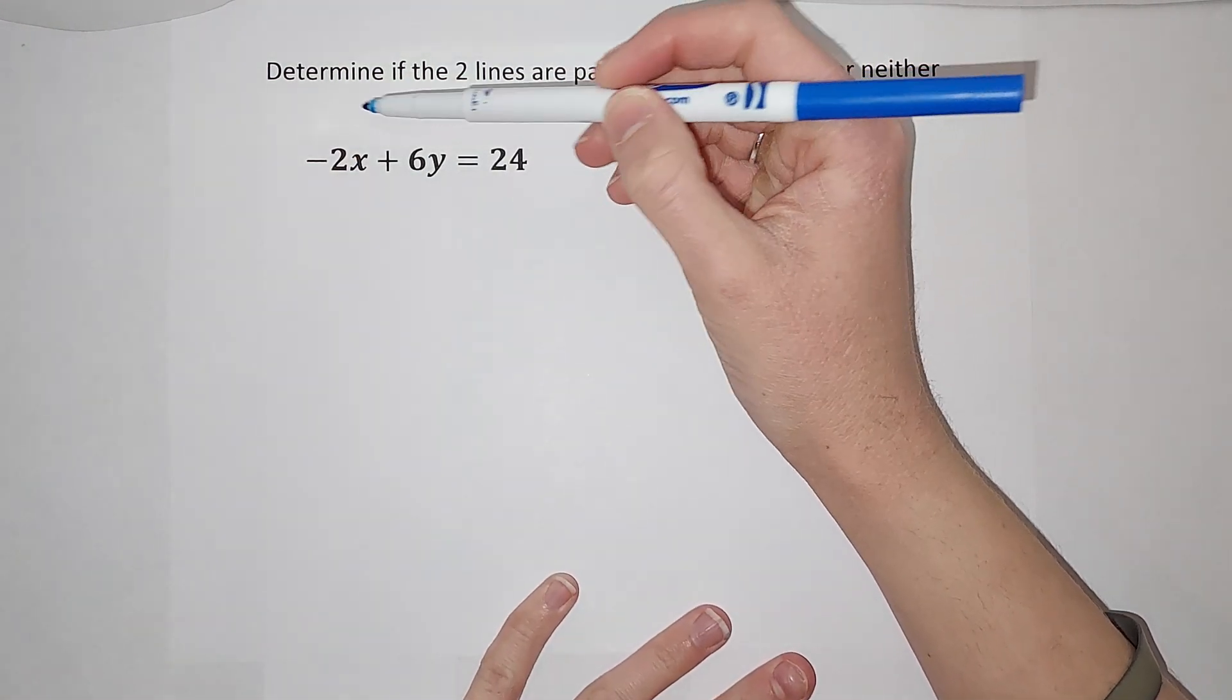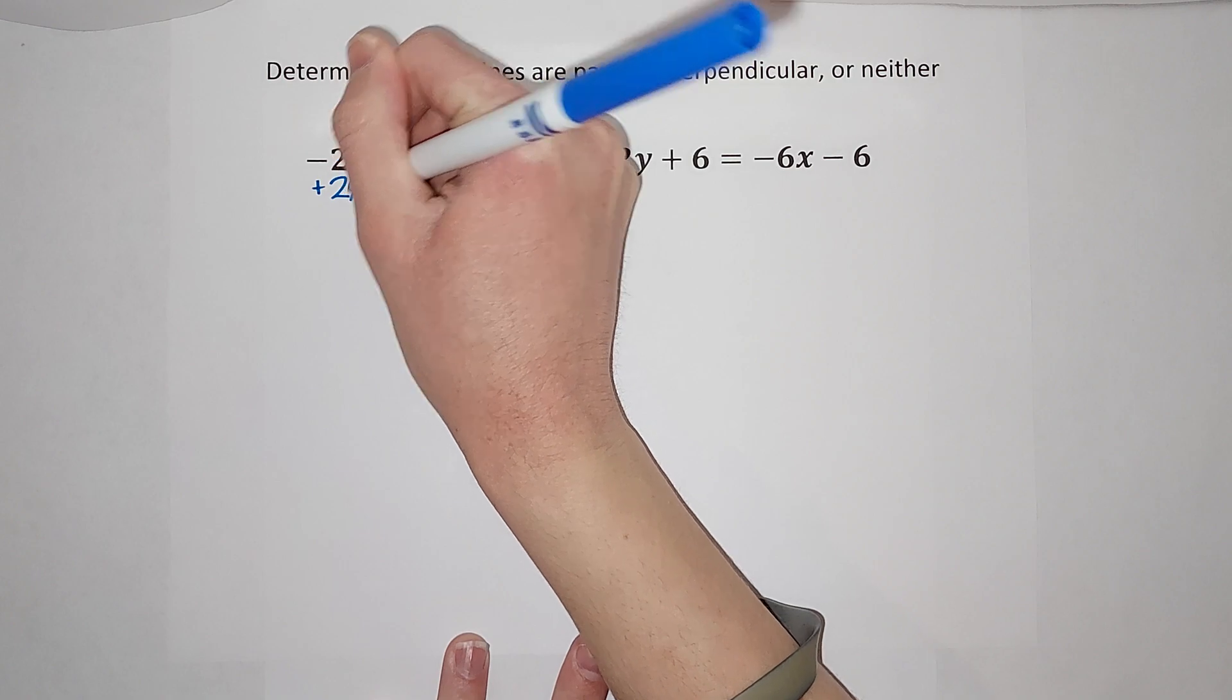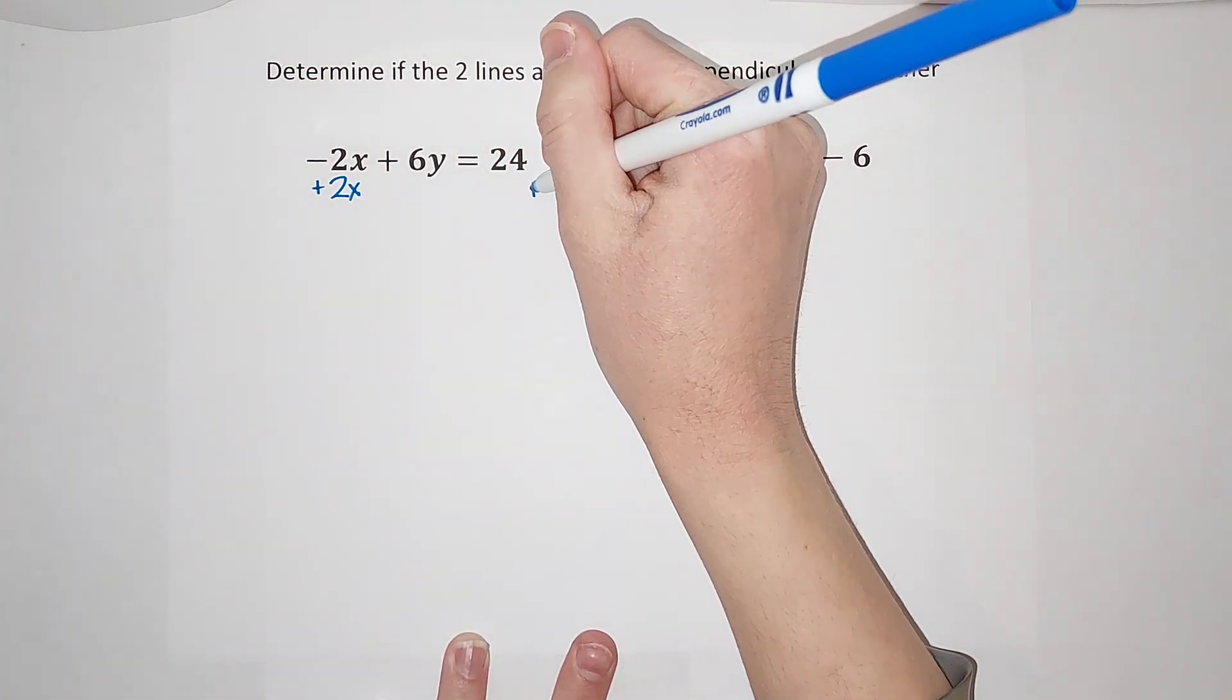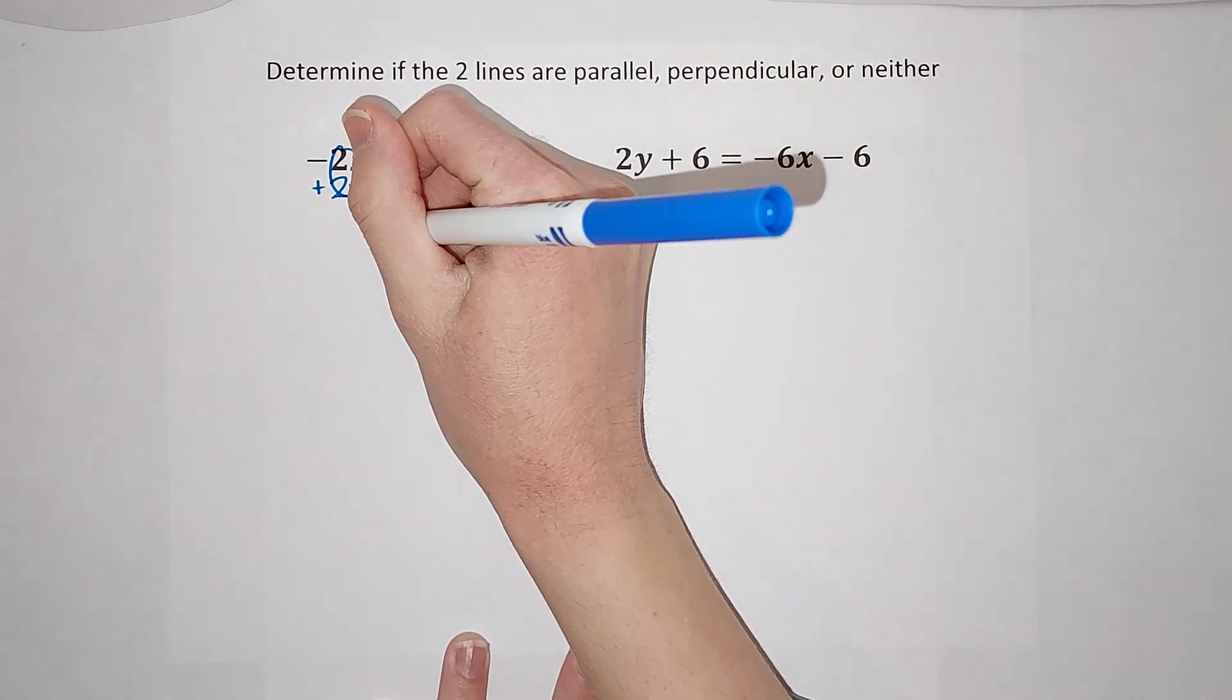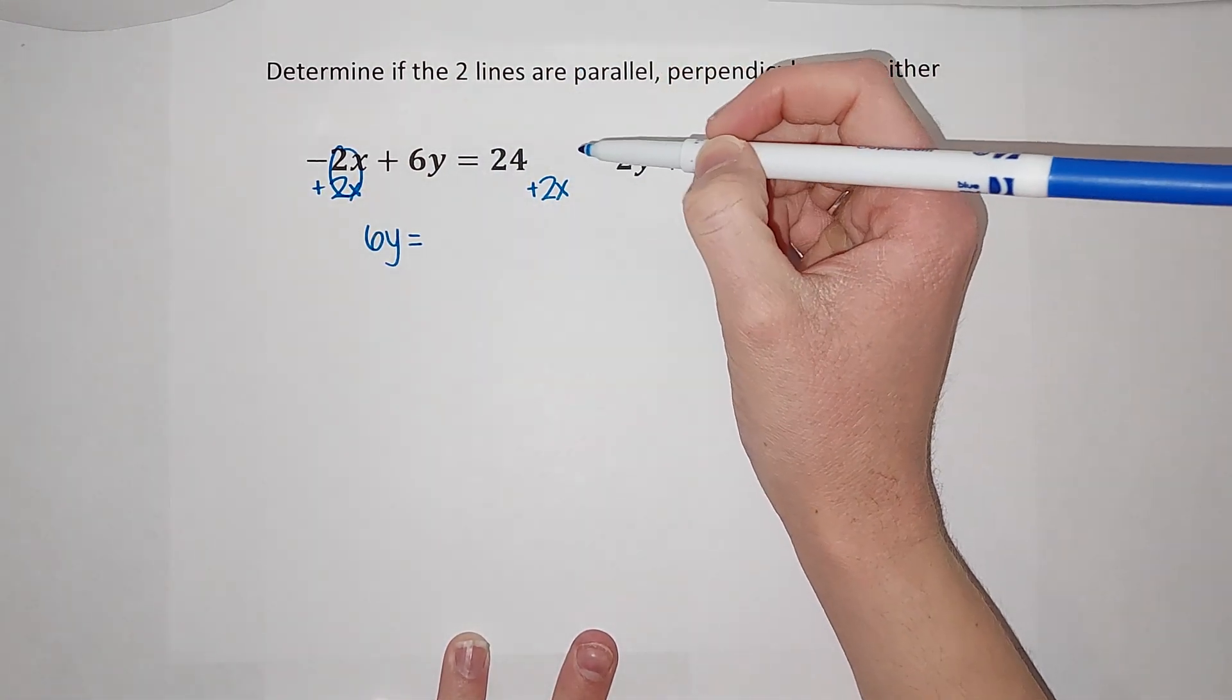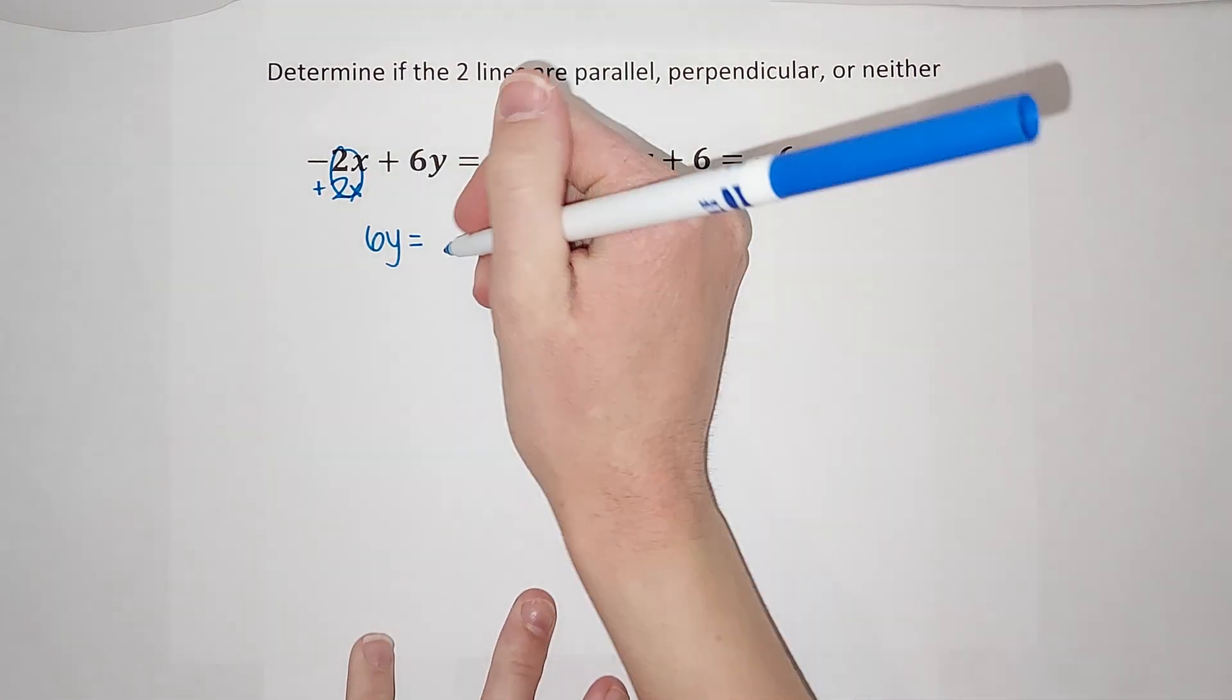Let's start over here. To get y alone, I need to get rid of this negative 2x, so I'm going to add 2x because then those go away on that side. But if I add 2x to this side of my equal sign, I got to add it to this side to keep my equation balanced. When I do that, I'm left with 6y equals, I can't combine these because they're not like terms, and I'm going to write the x first so I'm getting closer to this form. So I'm just going to write 2x plus 24.